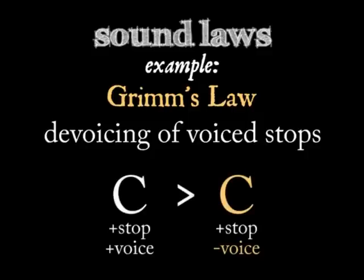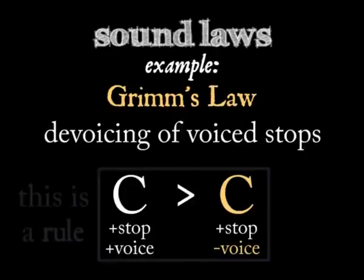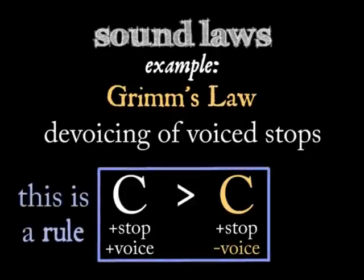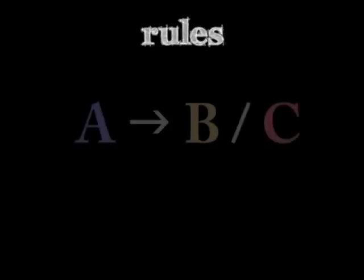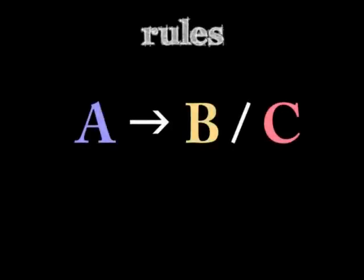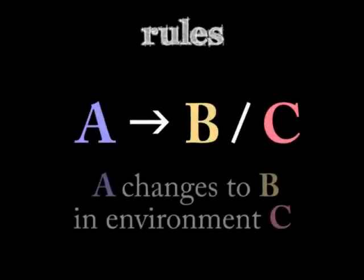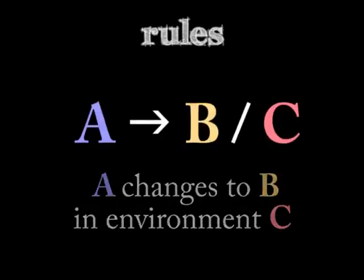Grimm's Law and other sound laws are built out of rules. These rules are the conventional way that historical linguists state how sounds change in a language. The basic formula is simple: give the sounds that change, the sounds that they change into, and the environments where that change takes place.